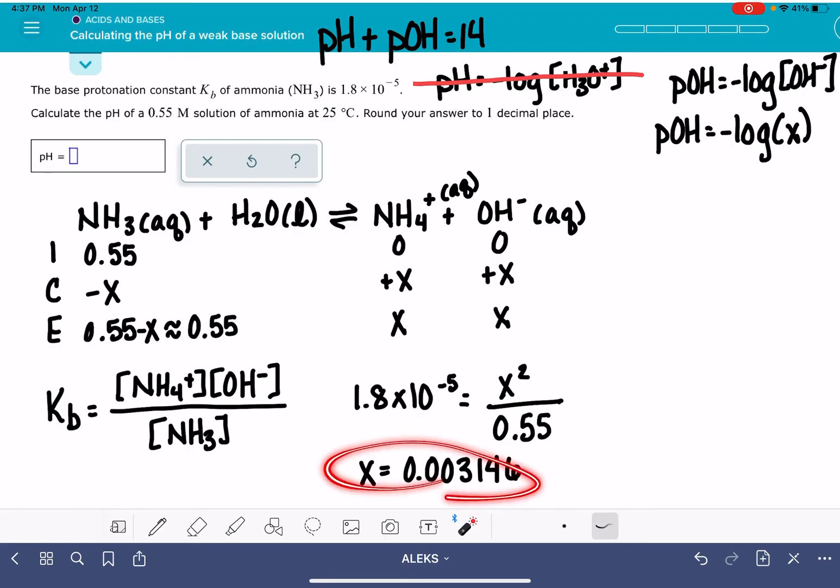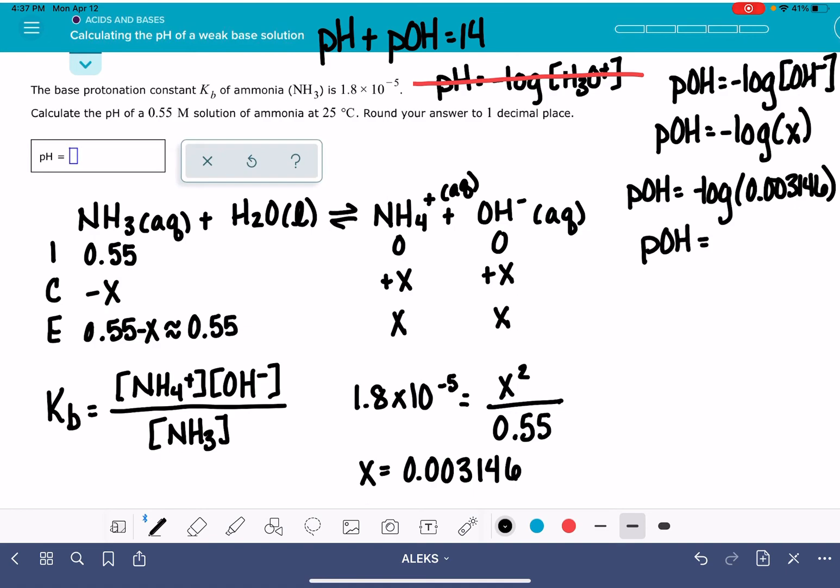That is my OH- concentration, and that's what I'm going to plug in to calculate pOH. pOH is the negative log of 0.003146. Be careful because this is the pOH. pOH is 2.502.